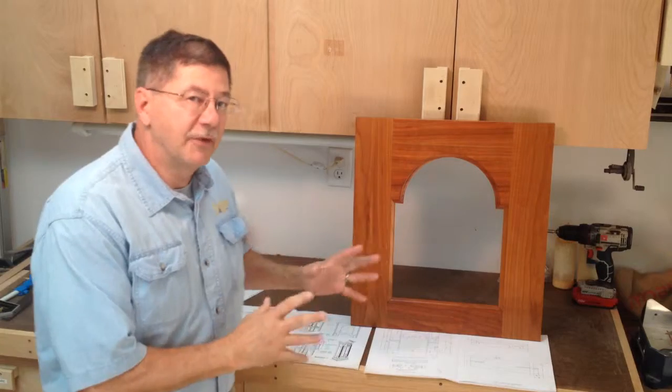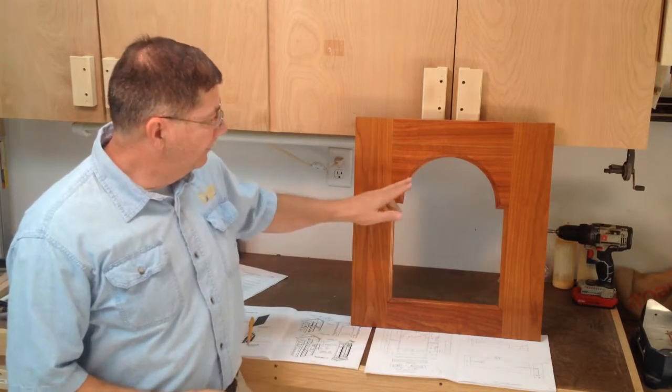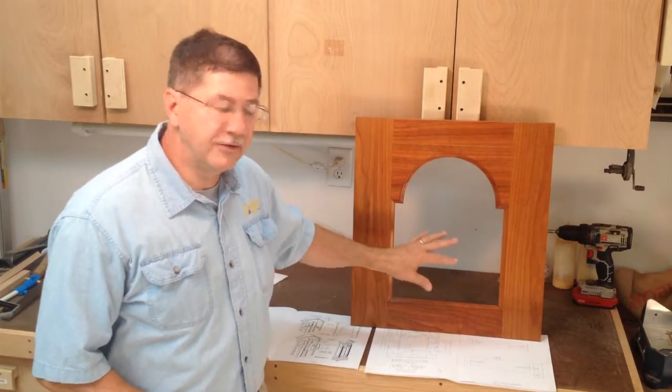One of the parts that we need to make for our grandfather clock is this dial trim panel. This is where the moon dial of the clock face and the clock face itself will fit.